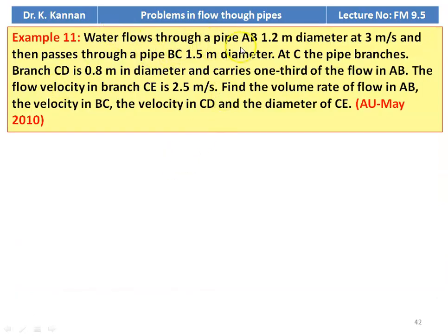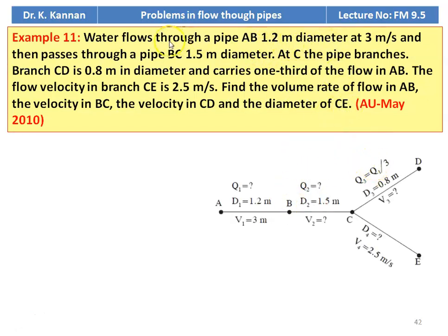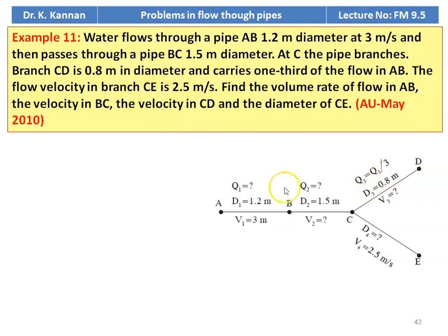Example number 11: Water flows through a pipe AB of 1.2 meter diameter. We refer to the diagram. AB has diameter 1.2 meter at velocity V1 equal to 3 meters per second, and then passes through pipe BC of diameter 1.5 meter. At C, the pipe branches: CD is 0.8 meter in diameter and carries one third of the flow in AB, so Q3 equal to Q1 divided by 3. The flow velocity in branch CE is 2.5 meters per second. Find the volume flow rate in AB and the velocity in BC.